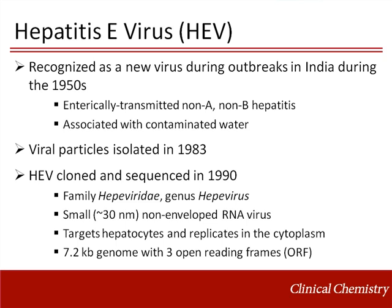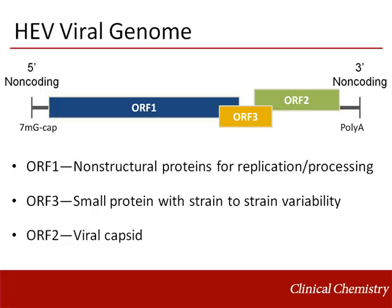The RNA genome has three overlapping open reading frames. Open Reading Frame 1, ORF1, encodes structural proteins required for viral replication and protein processing, including an RNA helicase and RNA polymerase.